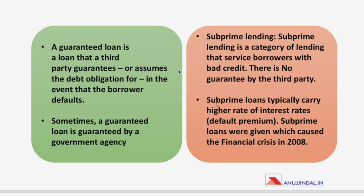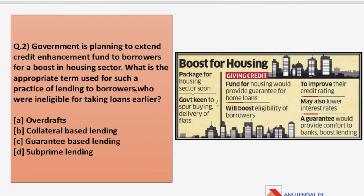Now, back to the question: the government is planning to extend the credit enhancement fund to borrowers who were earlier ineligible for taking loans. The answer is guaranteed lending — not subprime lending — because subprime lending involves borrowers with bad credit histories and no guarantees, whereas in guaranteed lending a third party (even a government agency) gives guarantee to banks for lending to ineligible borrowers.